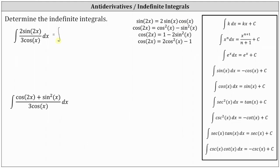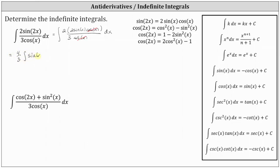The given integral is equal to the integral of two times two sine x cosine x divided by three cosine x dx. Notice in this form, cosine x divided by cosine x simplifies to one, and we're left with just the integral of four thirds sine x dx. Let's factor out the four thirds and write this as four thirds times the integral of sine x dx.